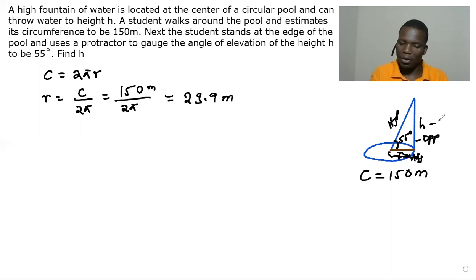So now we want this height. You're going to see that we have the opposite and we also have the adjacent now, and the angle. So we're going to use tan θ, which is given by opposite over adjacent.